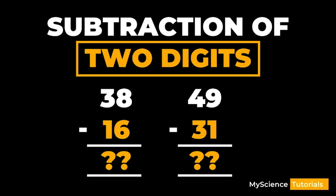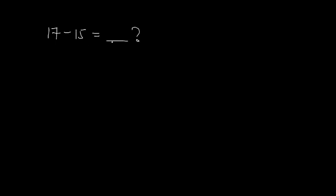Hello and welcome to my science tutorials. In today's video I want to look at subtraction of two-digit numbers. I want to first of all start by looking at a very simple example, so say we have 17 minus 15 — what is going to be our answer over here? This is just a very simple arithmetic and mathematics.